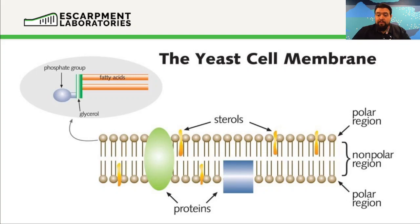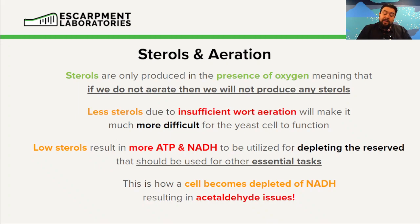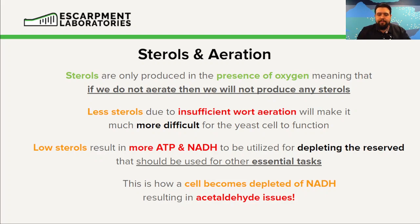You can see here we have these little sterols and the phospholipid membrane with some random proteins inserted into the cell membrane. These sterols help buffer and modulate the entire membrane, allowing it to better adapt to its environment. Here's the catch: sterols, even if they're present in the environment outside the yeast cell, studies have shown they are not really able to bring them inside the cell in a meaningful way. Sterols are only really able to be produced in the presence of oxygen, meaning that if we do not aerate, we will not produce any sterols. Less sterols due to insufficient wort aeration will make it more difficult for the yeast cells to function, depleting the ATP and NADH reservoirs so we won't have what's required to break things down like the acetaldehyde and diacetyl we just saw.